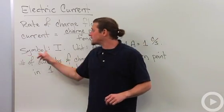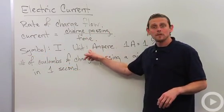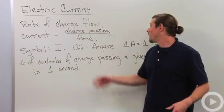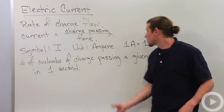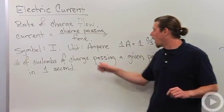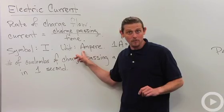It's given by the symbol I and the unit, of course SI units, what's charge? Coulombs. What's time? Seconds. So we got Coulomb per second. One Coulomb per second is called one ampere or amp.